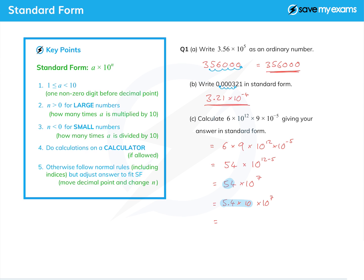And so I now need to combine the 10 and the 10 to the 7. Well, that is of course 10 to the 1, and we add the powers to get 10 to the 8. So I get 5.4 times 10 to the 8, and I have adjusted my original answer, 54 times 10 to the 7, to fit standard form. And that's how you do it.